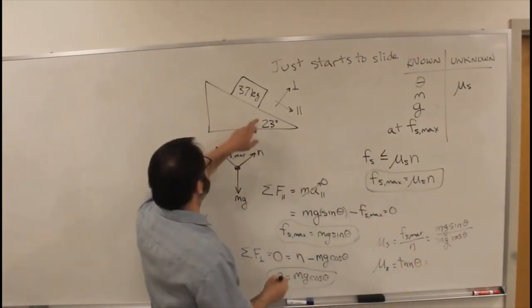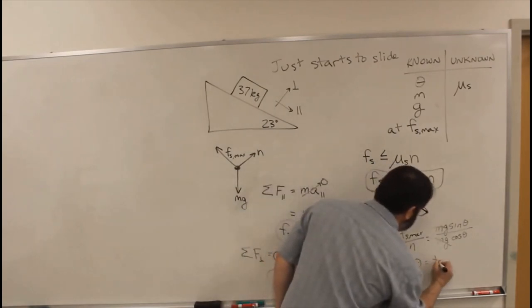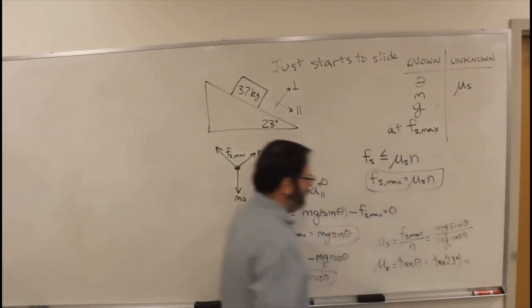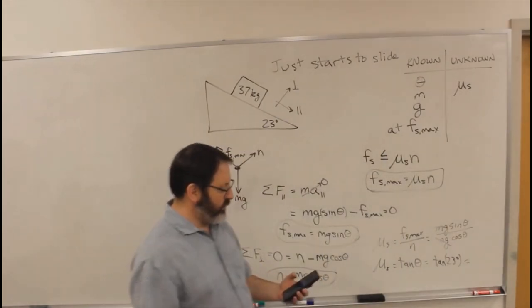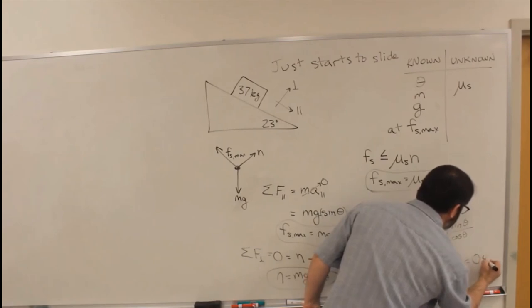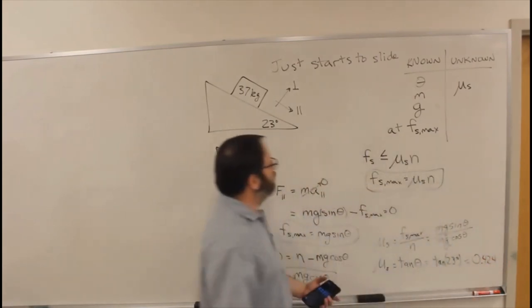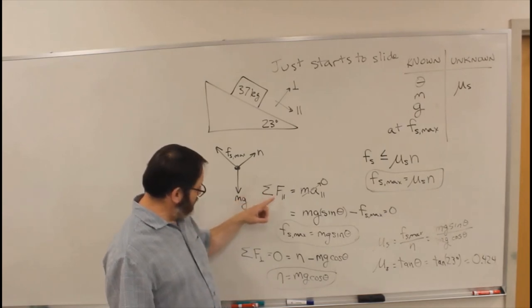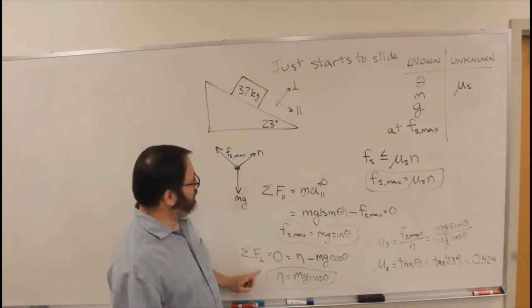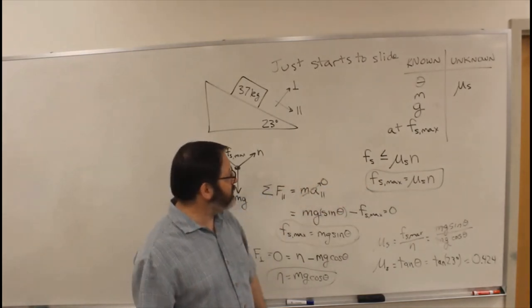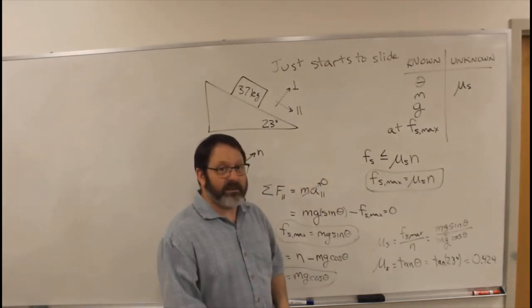Which is tangent of 23 degrees. And that is 0.424. And there we go. We had to use translational equilibrium in the parallel direction and the perpendicular direction, and we had to use the static friction force to get us there.